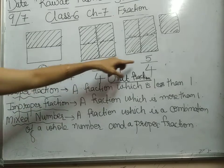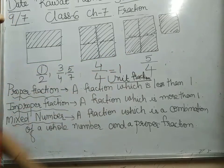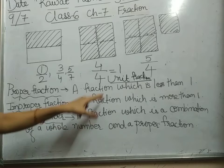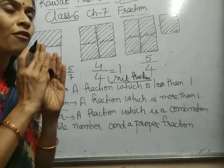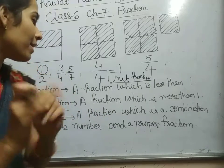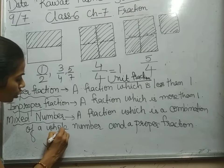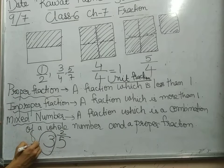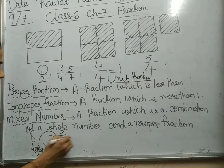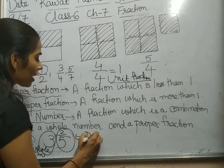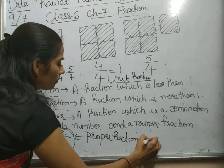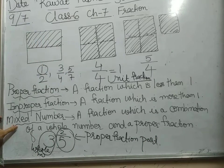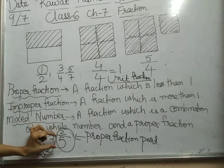Five by seven is also a proper fraction. Now, if you divide five by four, you will get one point something — your answer will be more than one. So, it is called improper fraction. And in mixed fraction form, there is a combination of a proper fraction and a whole number. For example, three and two by five — here three is called the whole number, and two by five is called the proper fraction part.